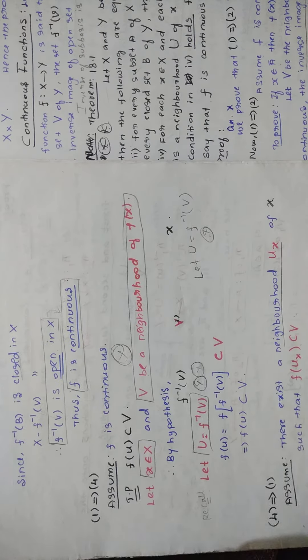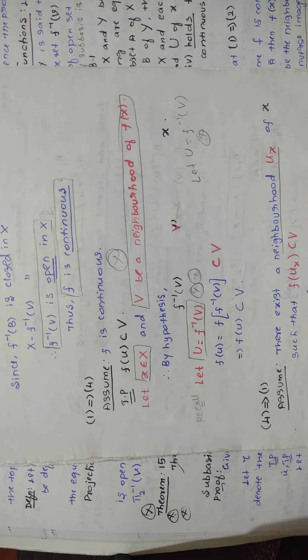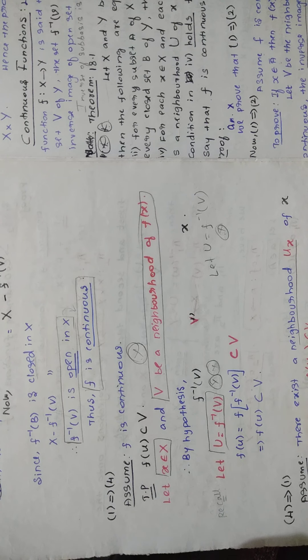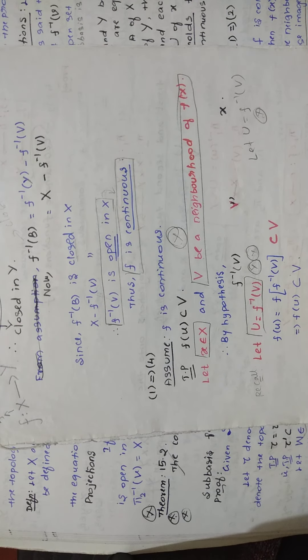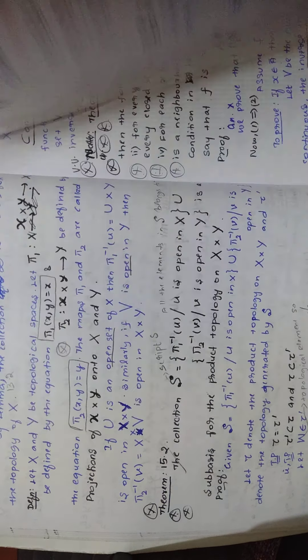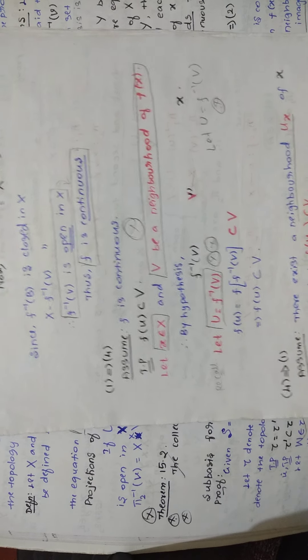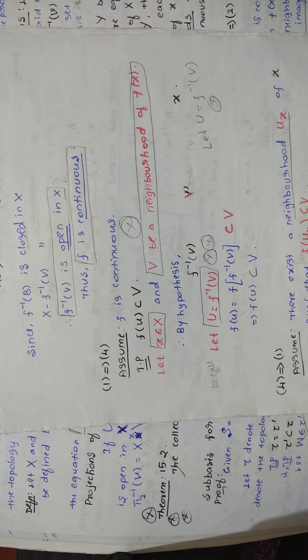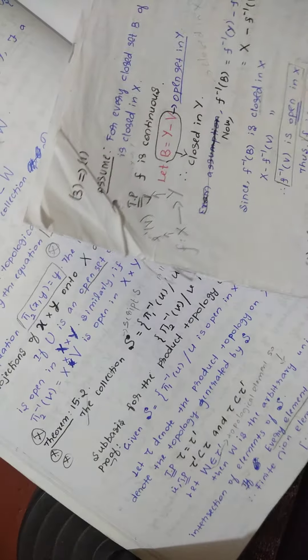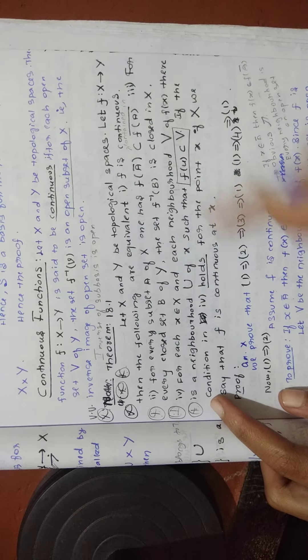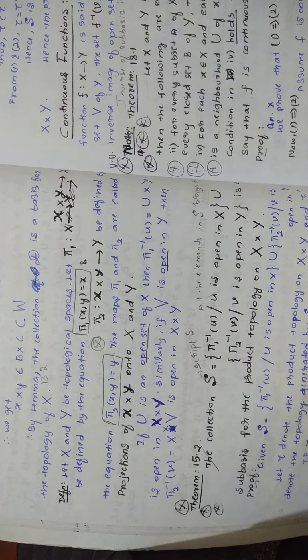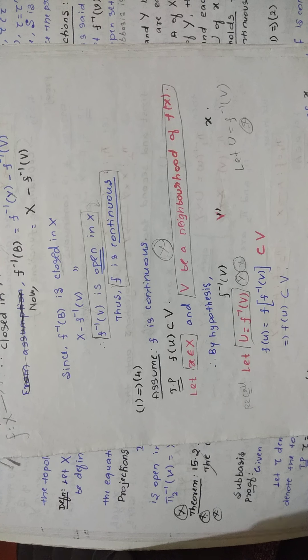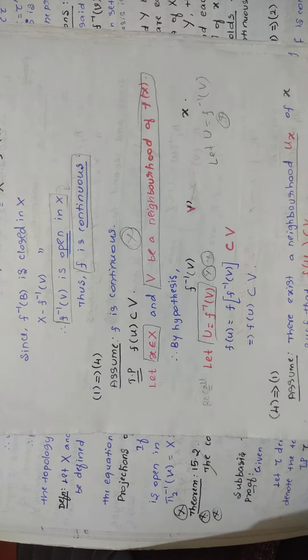In this video I will be explaining the '1 implies 4' part of Theorem 18.1. There are other videos where I have explained '1 implies 2', '2 implies 3', and '3 implies 1'. In this theorem we have to show that conditions 1, 2, and 3 are equivalent. You can visit my playlist and find topology videos there.